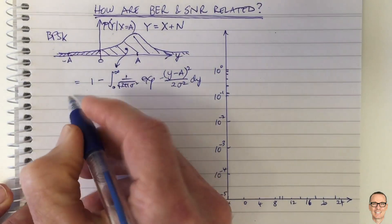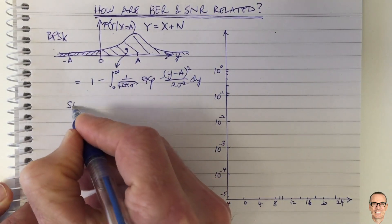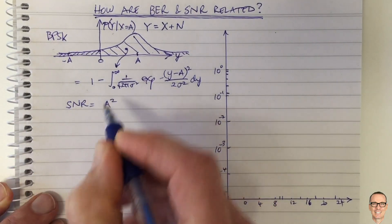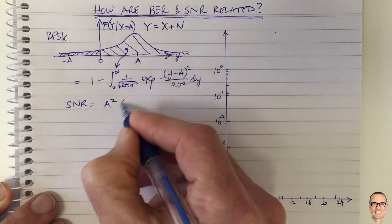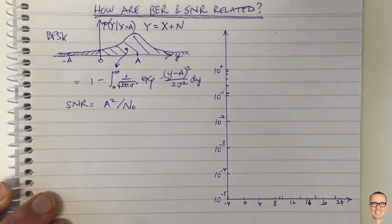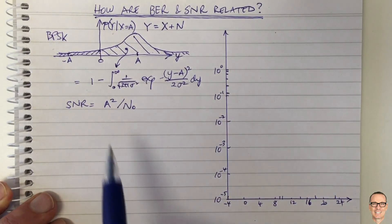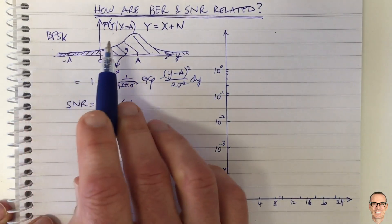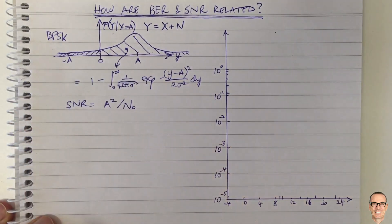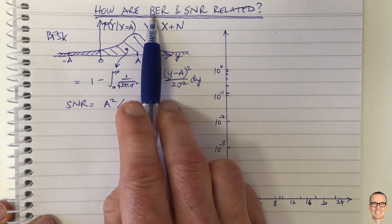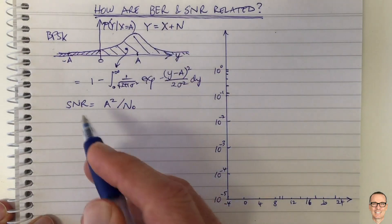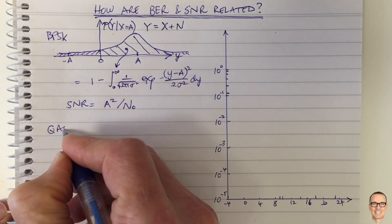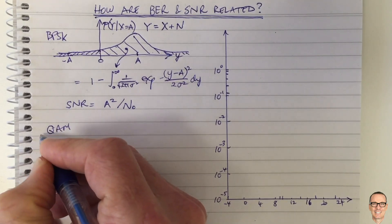It's important to note that the signal-to-noise ratio is equal to A squared — because that's the power in our signal — divided by the noise power N₀. This is the binary case, and the probability that you make an error in the binary case is the same as the bit error rate. But let's look at something more advanced and compare it to this.